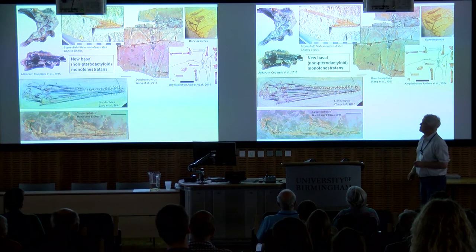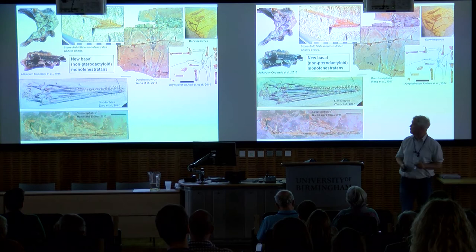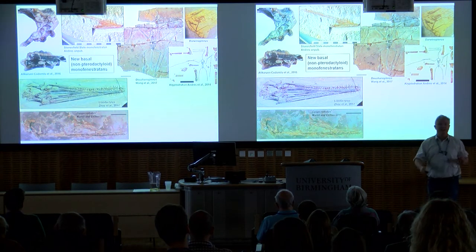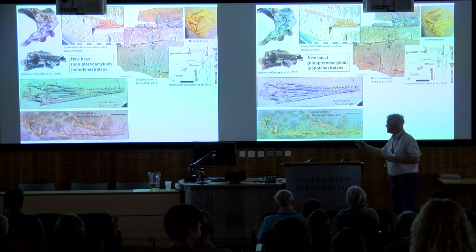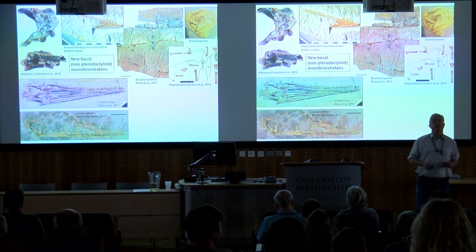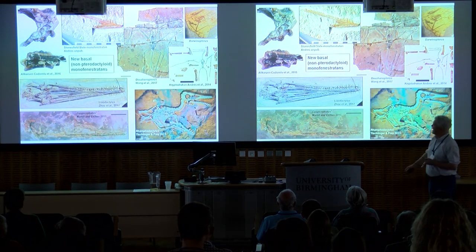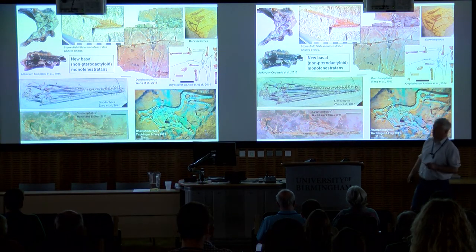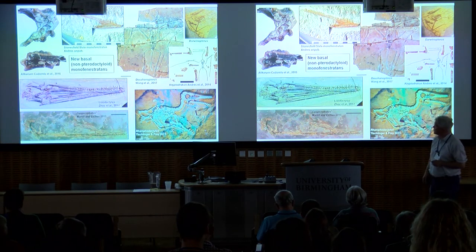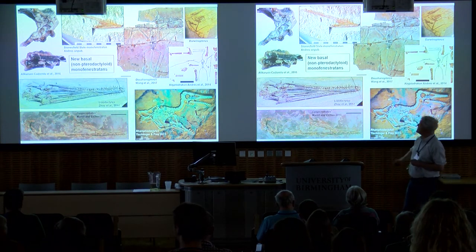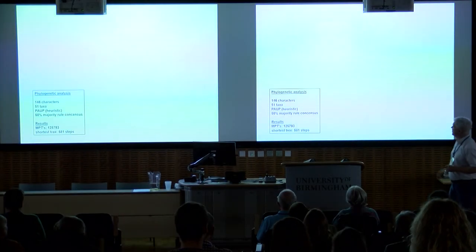We have Cuspicephalus, which is also related to Darwinopterus but a bit more derived — a wonderful find collected by Steve from the mid-Upper Jurassic Kimmeridge Clay. Finally, we have Ramphodactylus from the Purbeck formation, which just underlies the Solnhofen limestone, so that's late Upper Jurassic. This is a highly derived form, but it's not quite a pterodactyloid.